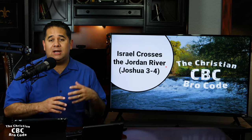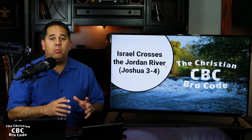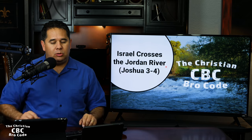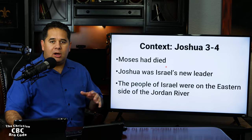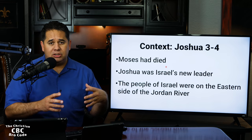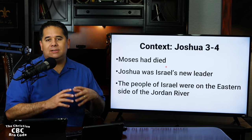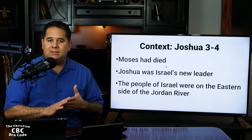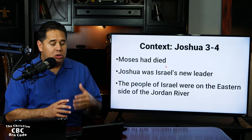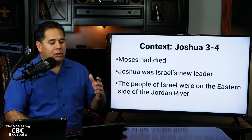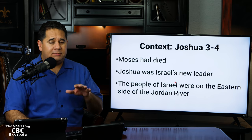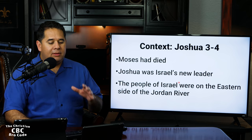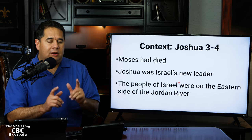Before I dive into the passage, I like to set it up with some context. So let's look at some context for Joshua chapters 3 and 4. By this point in the history of Israel, Moses had died. Moses had been Israel's leader for quite some time, and now Joshua is the new leader for the nation of Israel. The people of Israel find themselves on the eastern side of the Jordan River.